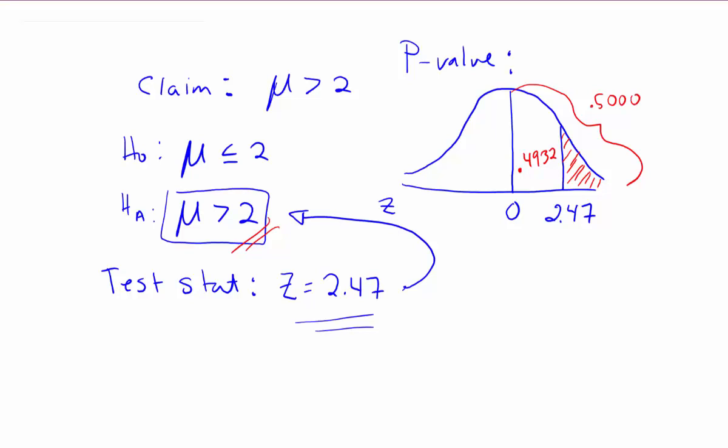If the part in white is 0.4932, if we take that away from 50%, we should be left with the part that's shaded in red. So if we subtract off that 0.4932 area, which is not the area we want, we're left over with the area we do want, which ends up being 0.0068.